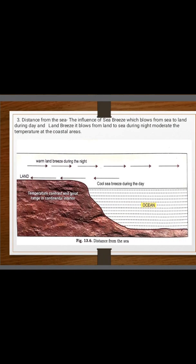Distance from the Sea: The influence of the sea breeze, which blows from sea to land during the day, and the land breeze, which blows from land to sea during night, moderates the temperature at coastal areas. That's why coastal areas get moderate temperature. Interior regions experience extreme temperature because they are unable to get the influence of the land breeze and sea breeze.